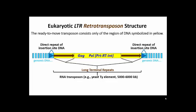Ty is an example of an LTR retrotransposon. These transposons are characterized by having long terminal repeat sequences, about 300 base pairs, flanking the genes in the element.